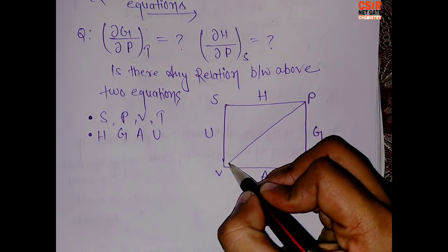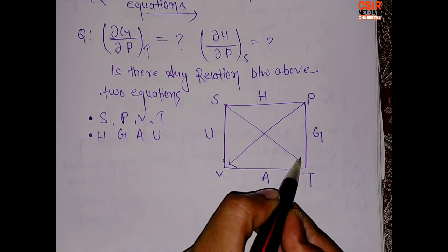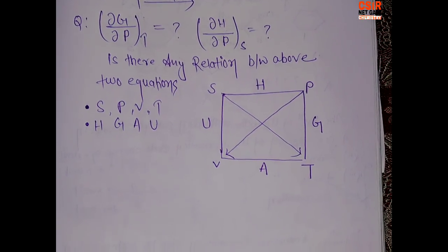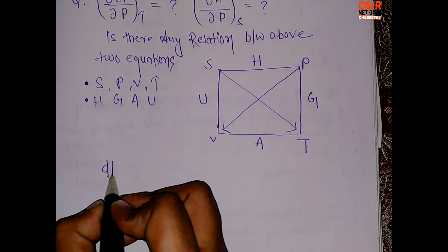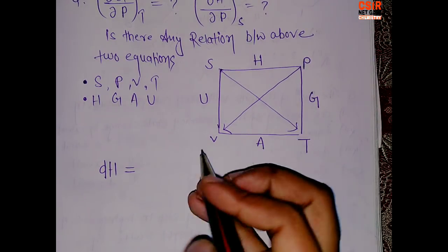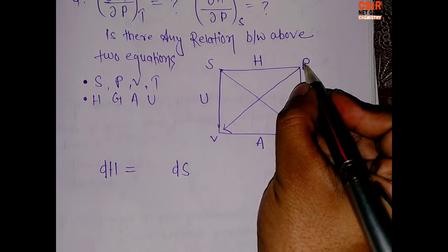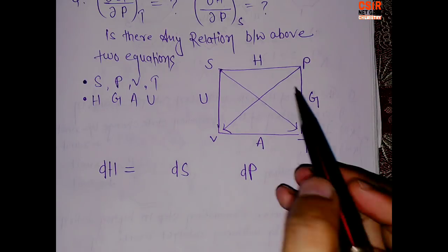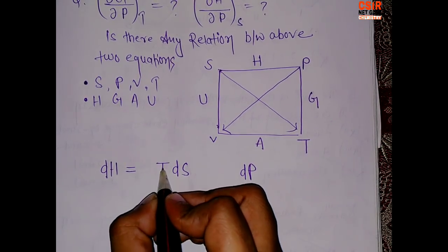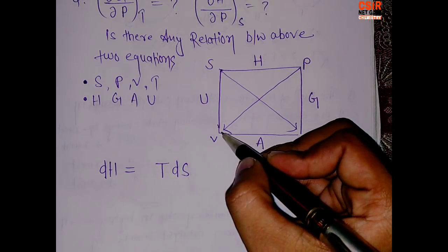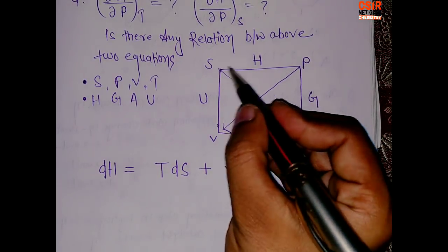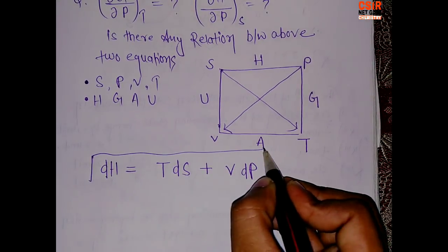Now, how to write the equation for enthalpy: write dH equals to — H is placed between S and P, so write dS and dP. From S, the arrow goes to T, so write T dS. From P, the arrow goes to V, so write V. The arrows are emerging from both parameters, so use a plus sign. This gives the enthalpy equation.